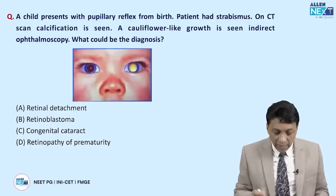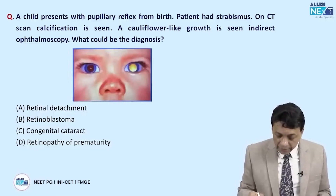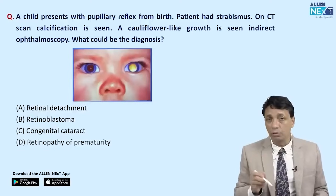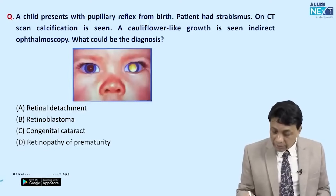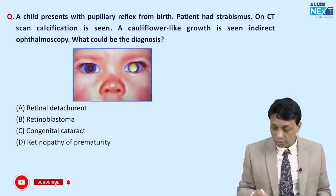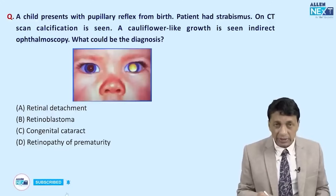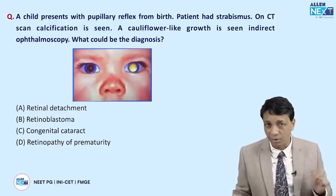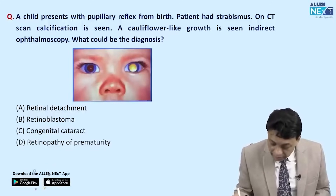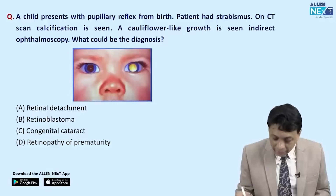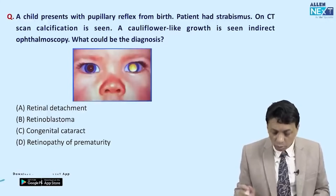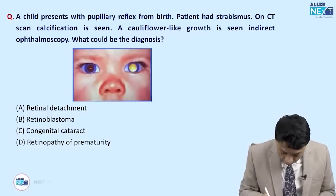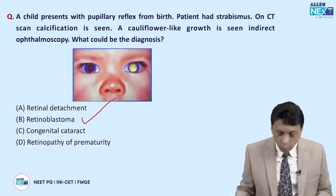A child presents with a pupillary reflex — a whitish reflex visible from birth. Remember, the normal red glow is normal. The patient also has strabismus (a squint), and on CT scan a calcific lesion is seen. You've been given so many clues it's impossible to get the answer wrong. A cauliflower-like growth is seen on direct and indirect ophthalmoscopy. You should look straight away for the answer: retinoblastoma.